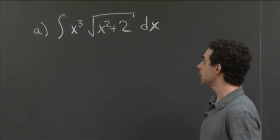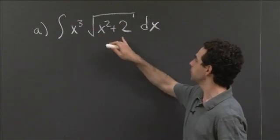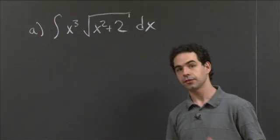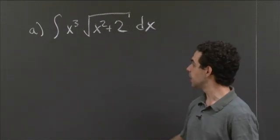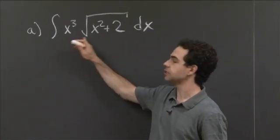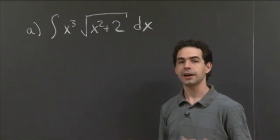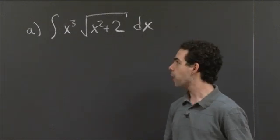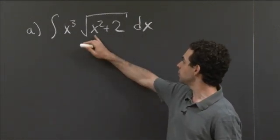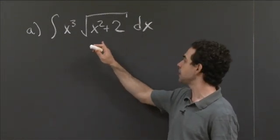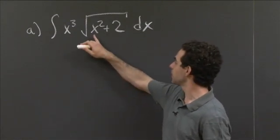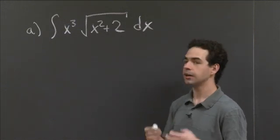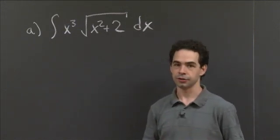There are a few different things you might think to try here. One is that the square root of x squared plus 2 is the sort of thing that shows up in trig substitutions. Another is that this is a product of two things, so you might consider integration by parts. And the third is that this might just be a substitution situation — x squared plus 2 is this sort of discrete entity that shows up, so you might try a regular substitution.